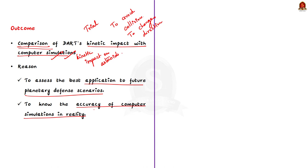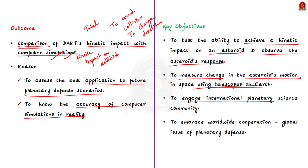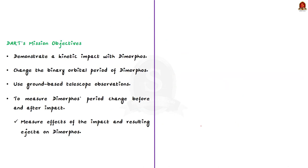Now that we know what DART is and its purpose, let us see the key objectives. First, DART is a test of NASA's ability to achieve a kinetic impact on an asteroid and observe the asteroid's response. Second, to measure how much the impact changed the asteroid's motion using telescopes on Earth. Third, this mission engages the international planetary science community to address planetary defense. In specific terms: demonstrate a kinetic impact with Dimorphos, change its binary orbital period, use ground-based telescopes to measure the period change before and after impact, and measure the effects of resulting ejecta on Dimorphos.